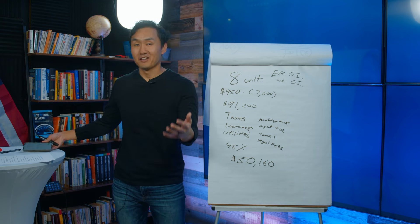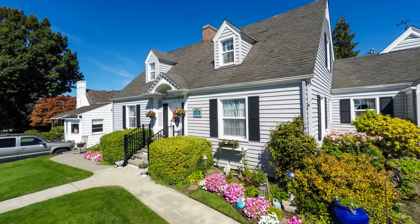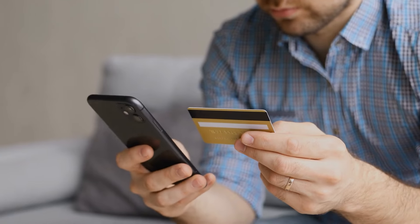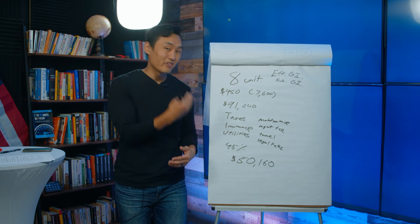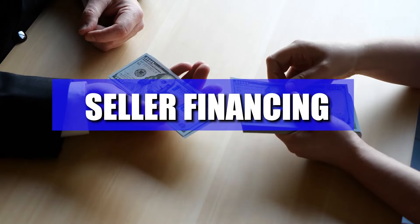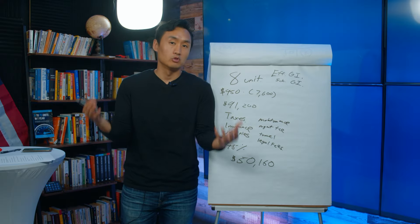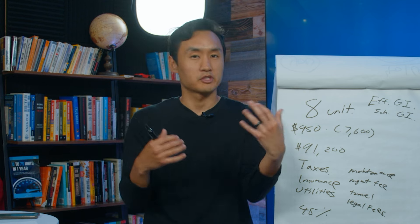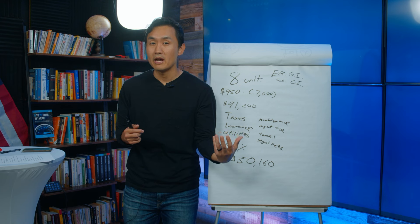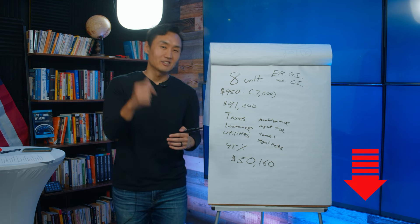We're not done yet — there's debt service, which is the mortgage payment made to the lender. Just like a homeowner with a 30-year mortgage, you make that payment every month. In this case our mortgage payment went to the seller, because we bought on seller financing — where the seller carries the note and provides financing instead of a traditional bank. There are lots of pros and cons to seller financing, mostly pros, and we have a full three-hour course on it linked in the description.